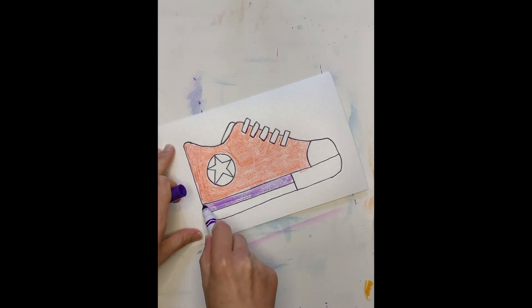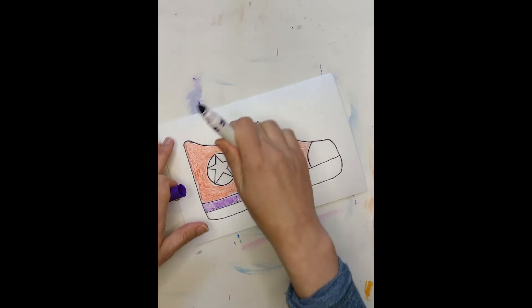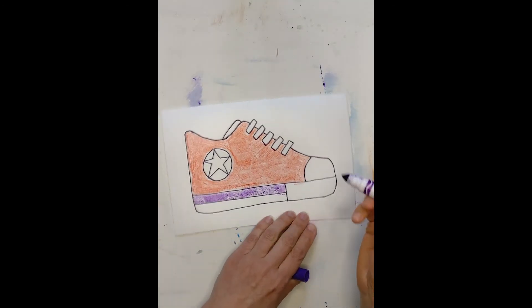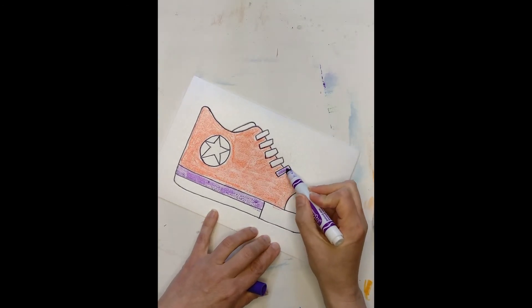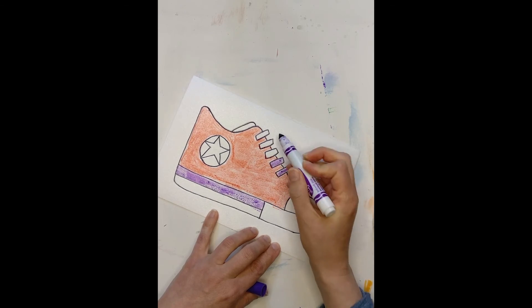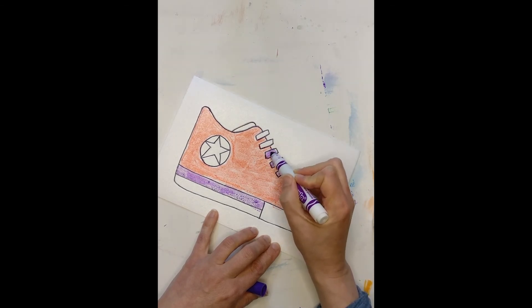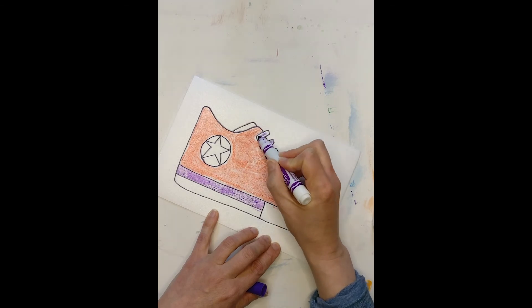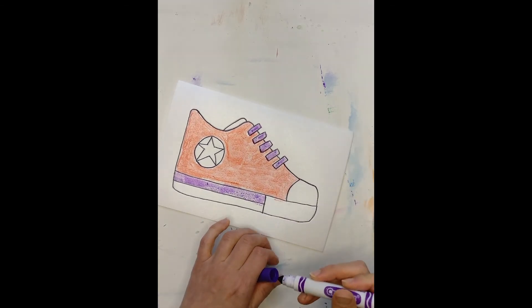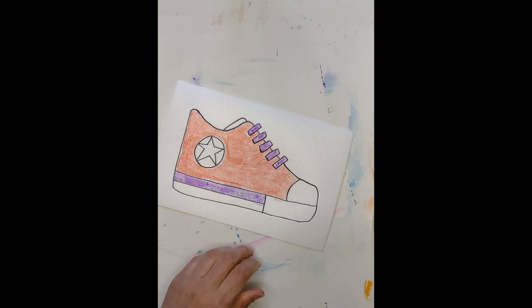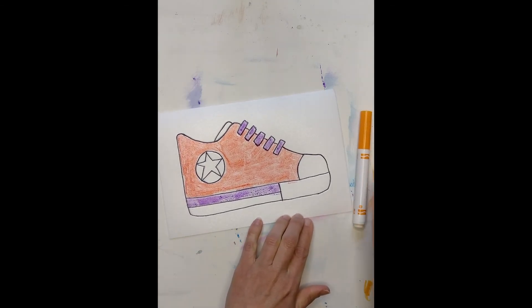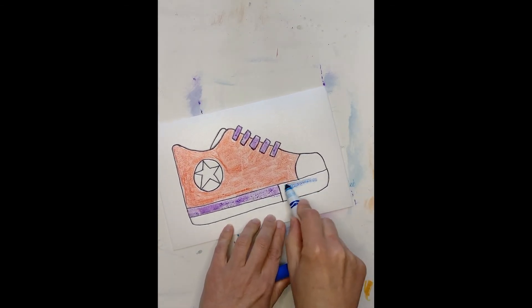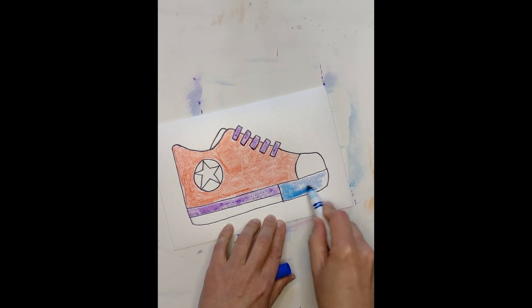And I do encourage you to fill in the whole background because that'll really help the outline of the shoe stand out. I think I might use purple for the laces too. Okay, I'm just going to keep going, picking a variety of colors for my shoe. The video is probably going to speed up as I do this. And then we'll print our plates.